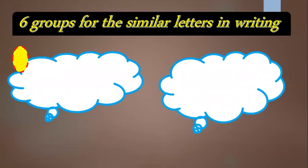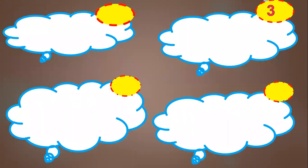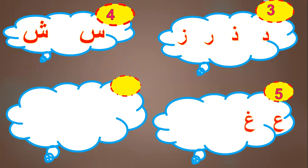There are six groups for the similar letters in writing. The first group, the second group, the third group, the fourth group, the fifth group is ayn ghayn faaqaf, group number six is sa-da-ta-da. Let's start with the first group: ba-ta-sa-nun-ya.